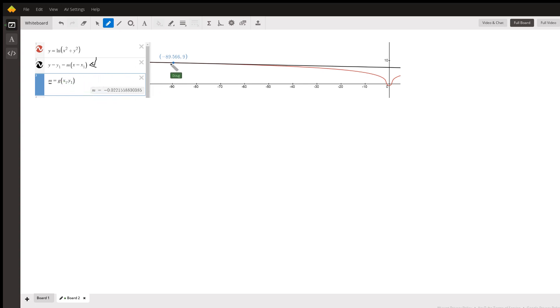Y minus y sub 1 equals the slope, which we got by evaluating the first derivative, g at x sub 1, y sub 1, times the quantity x minus x sub 1. All right, and that black line sure looks like a tangent line to the curve at that point.